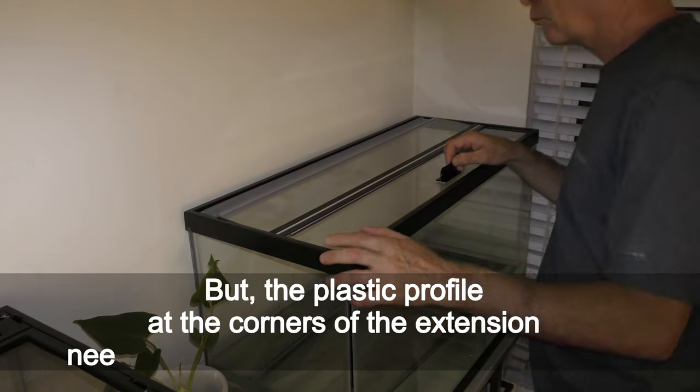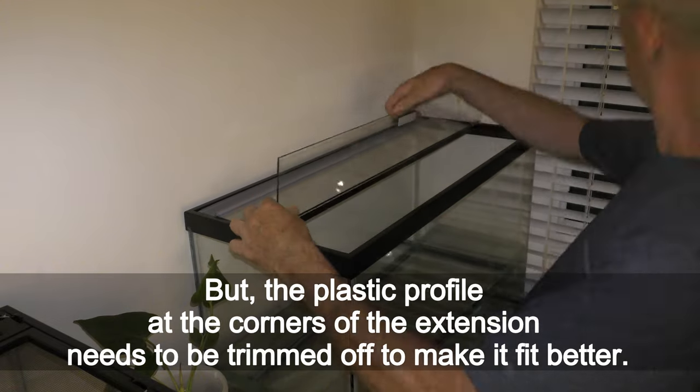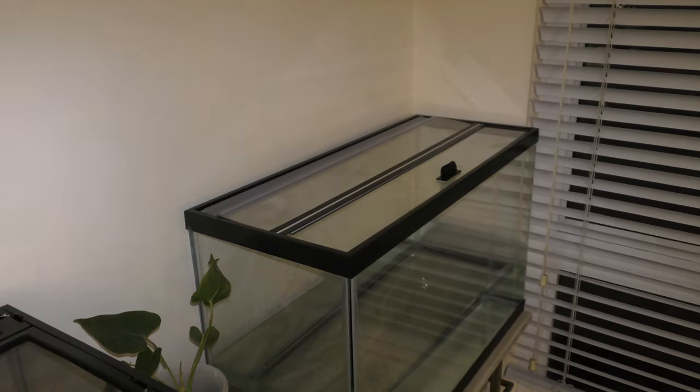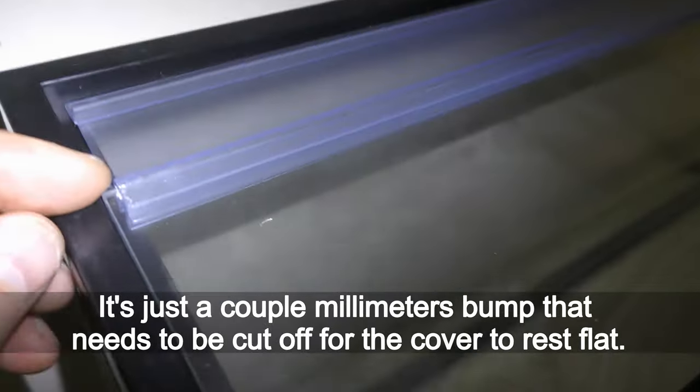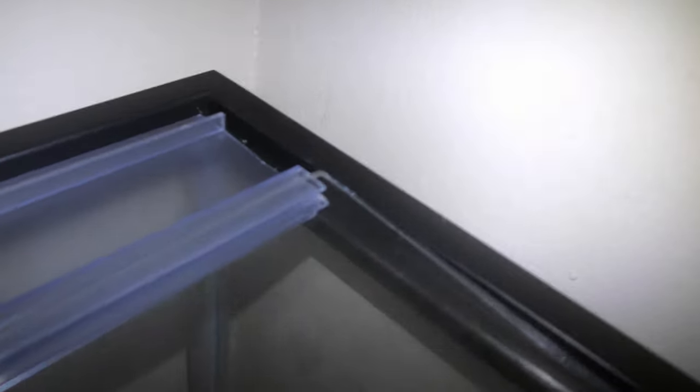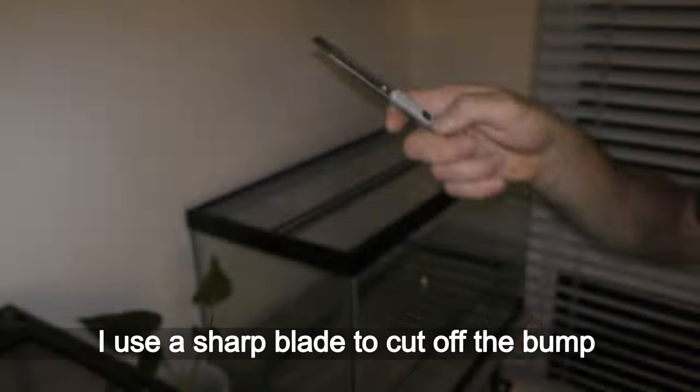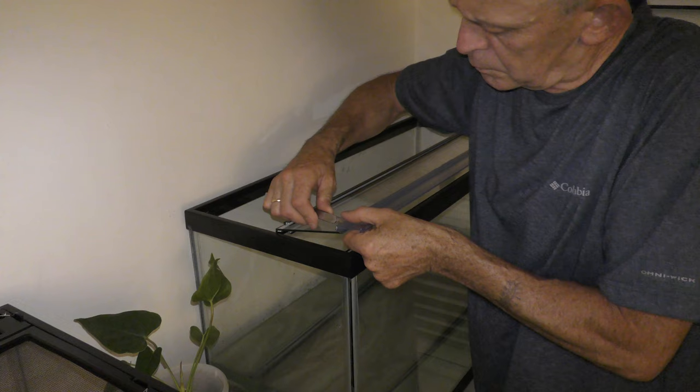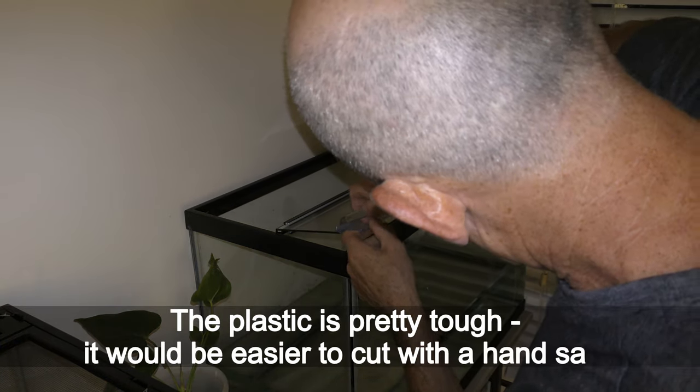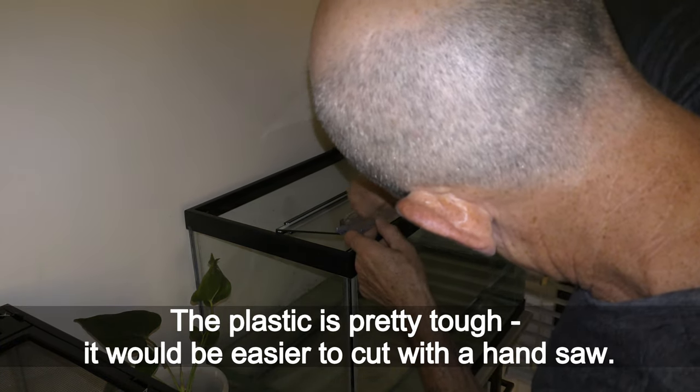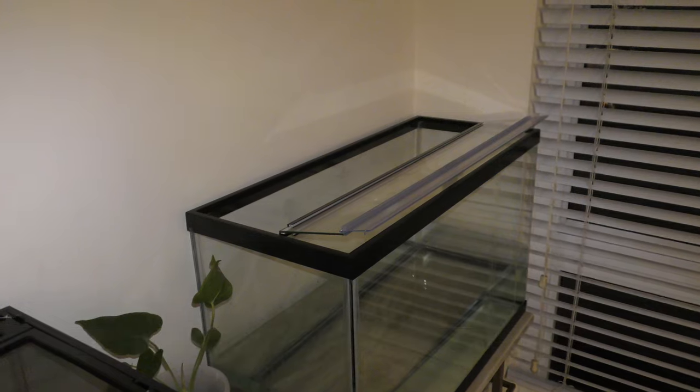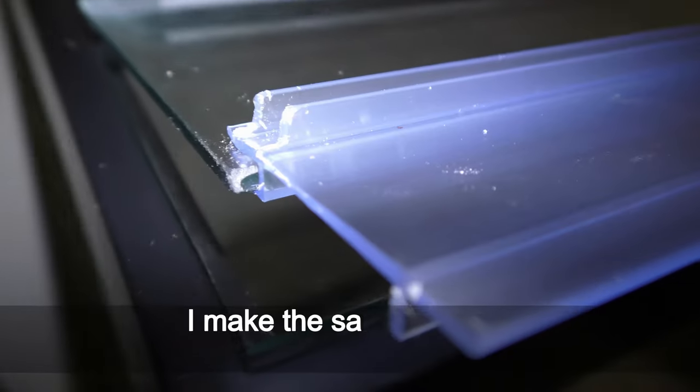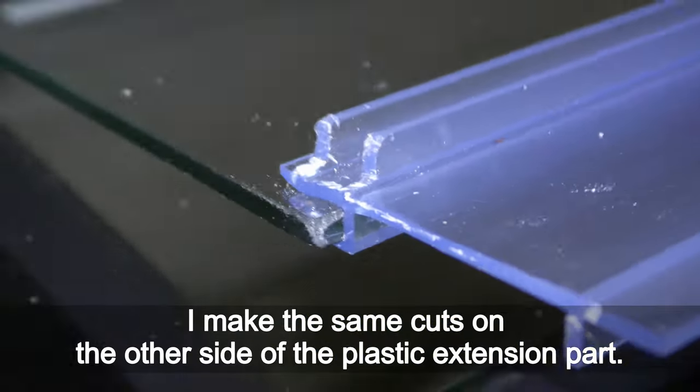But the plastic profile at the corners of the extension needs to be trimmed off to make it fit better. It's just a couple millimeters bump that needs to be cut off for the cover to rest flat. I use a sharp blade to cut off the bumps. The plastic is pretty tough. It would be easier to cut with a hand saw. Here, take a look at the cut I made.